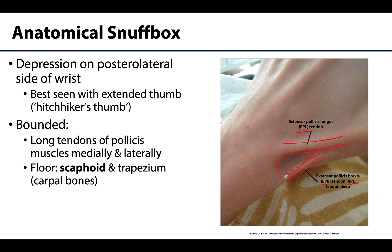The floor of the snuff box, which can be palpated, consists of two carpal bones: the scaphoid and the trapezium — both on the lateral side of the carpals. You can also palpate the styloid process of the radius in the proximal portion of this region on deep palpation.